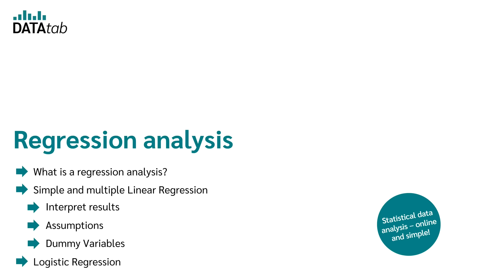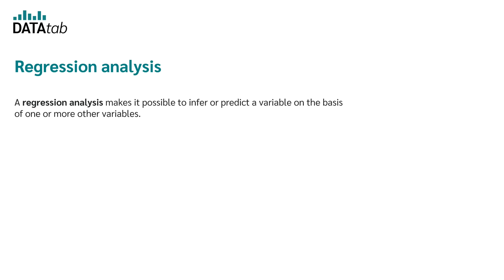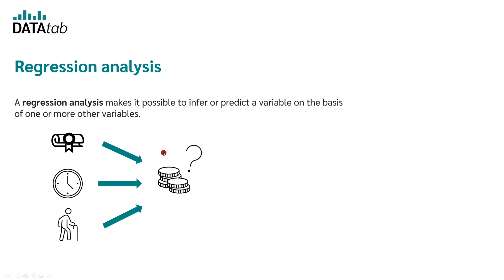A regression analysis allows you to infer or predict a variable based on one or more other variables. Let's say you want to find out what influences the salary of people. You could take the highest level of education, the weekly working hours, and the age of people to investigate whether these three variables have an influence on salary. The variable you want to predict is called the dependent variable or criterion. The variables you use for prediction are called independent variables or predictors.